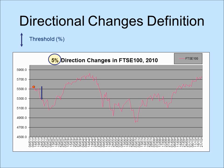Here is the point from which price dropped by 5%. We say that a directional change event took place from the extreme point to the point where price dropped by 5%. Here is the point from which price rose by 5% — an upturn directional change occurred. From the end of the previous directional change to the beginning of the current directional change, we say that an overshoot event has taken place.